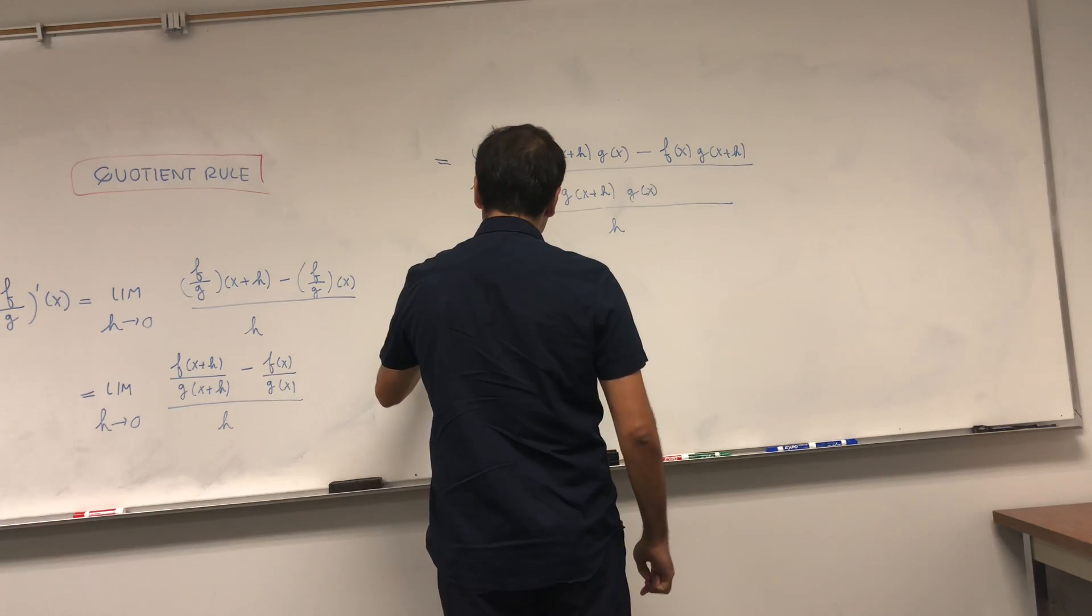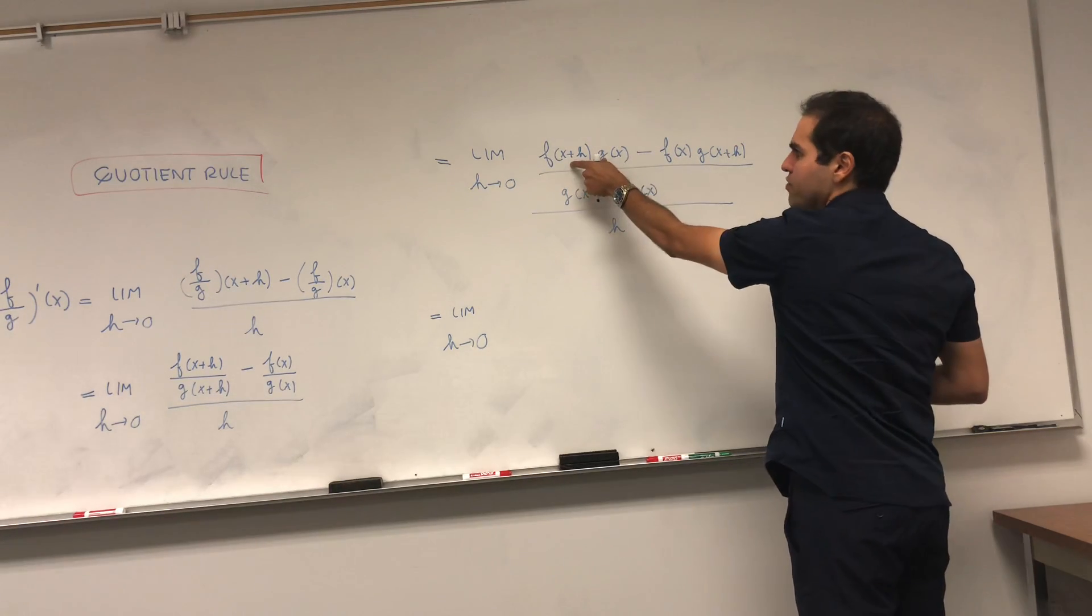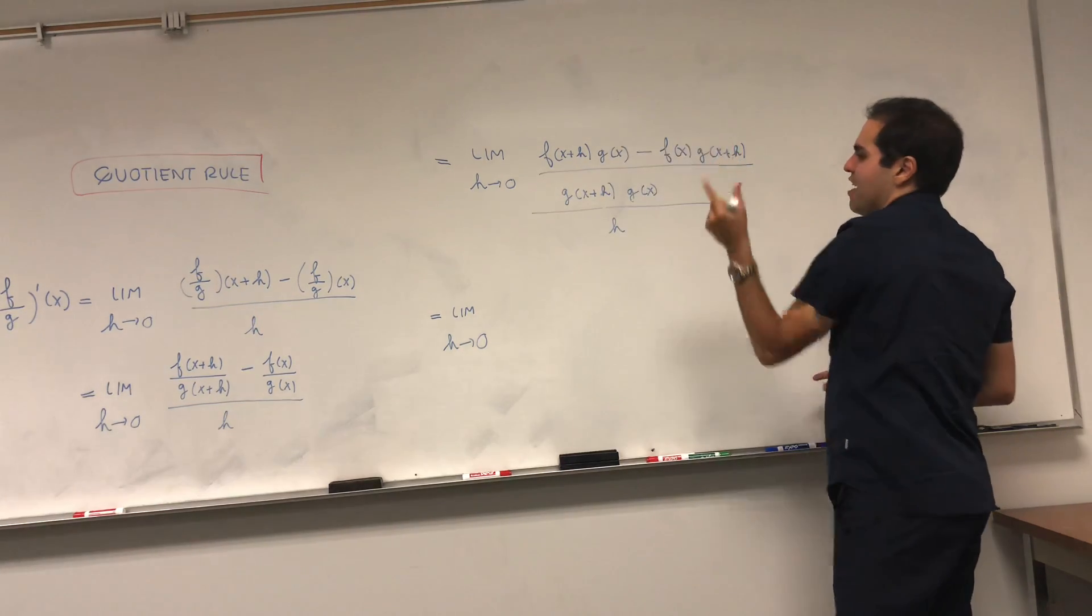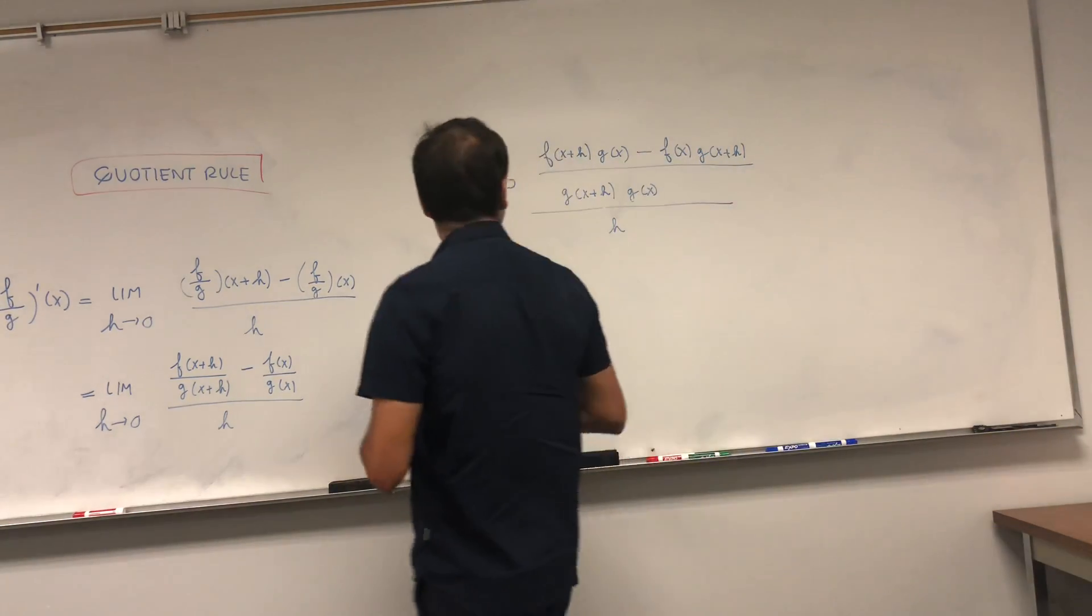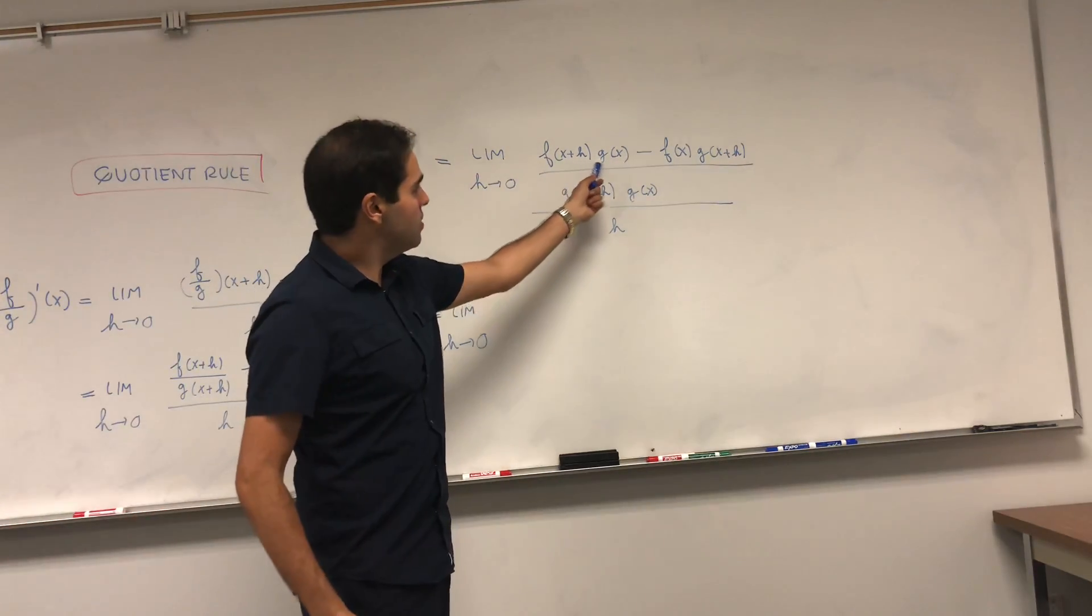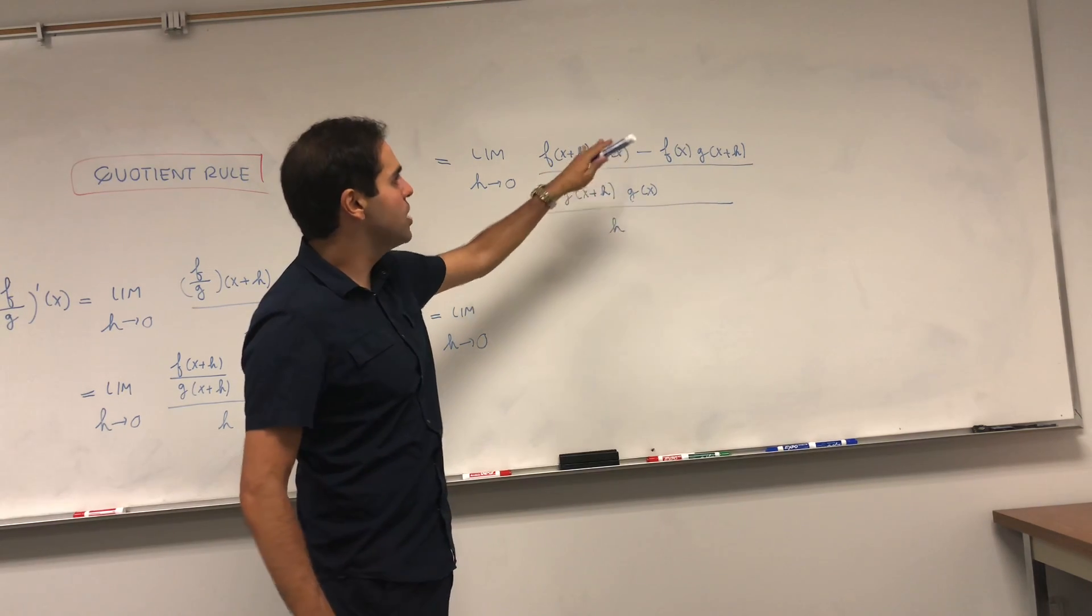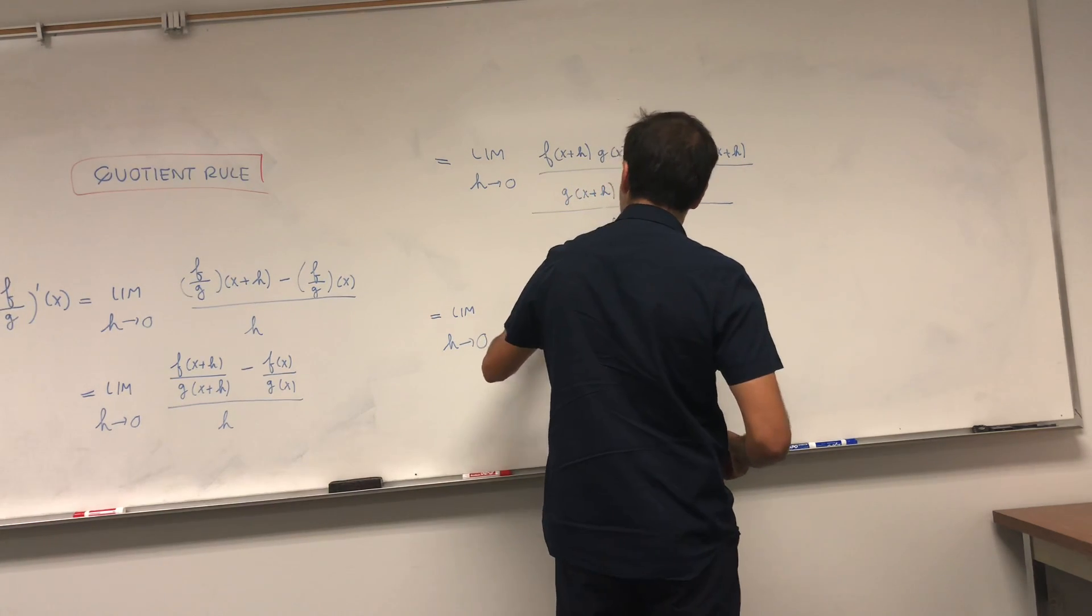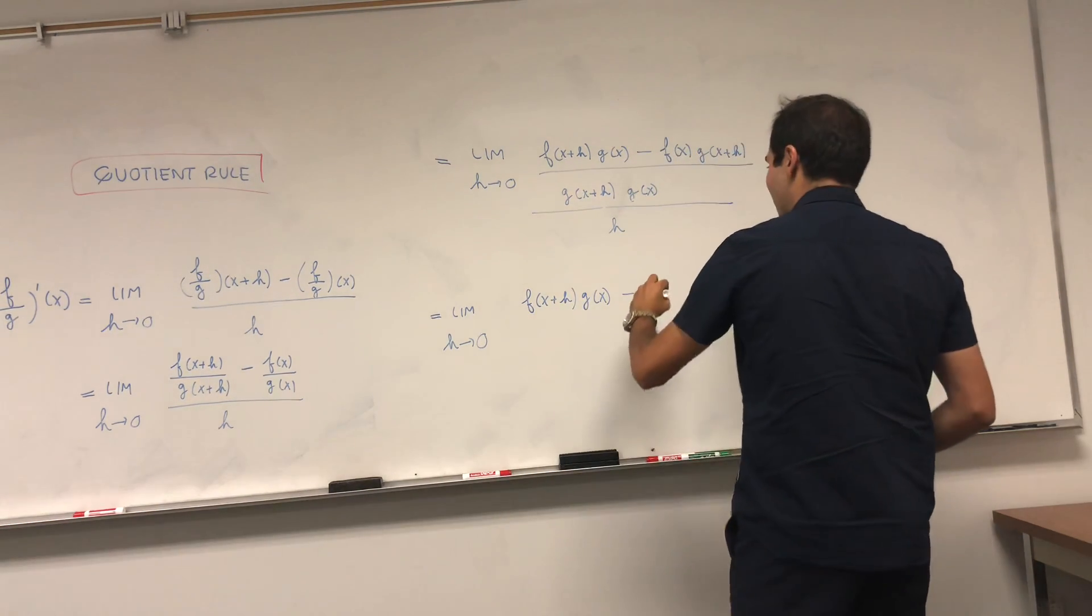Okay, and this is all good, but so far there's nothing much we can do because if you take that limit, you have the numerator goes to zero because you have f times g and f times g, and it's divided by h. So zero over zero, that's not good. But let's just tweak this a little bit because this term almost looks like a derivative of f if we had f of x plus h minus f of x. So in fact, let's start with this term again, f of x plus h times g of x, and let's subtract an f of x term.